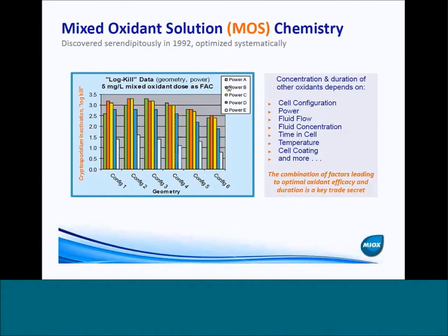The legend here talks about different cell set points. Power is an important component of what the cell set point is, but there are other factors that are extremely important as well. You can see it going all the way from set point A all the way to power E. If you take a cell configuration, say configuration six, you can go from what would be kind of a sodium hypochlorite disinfection efficacy at a little over half a log inactivation up to at least an order and a half of magnitude difference by changing the set points for that electrolytic cell.